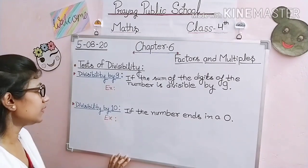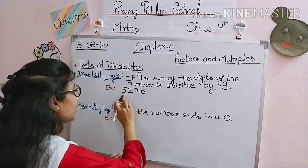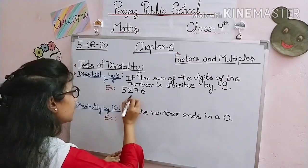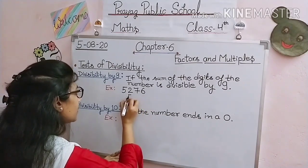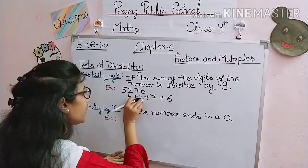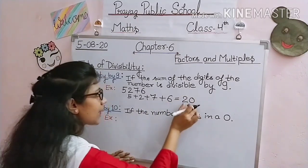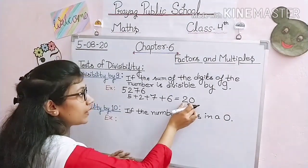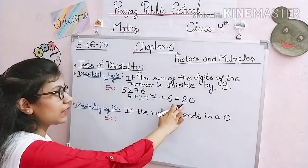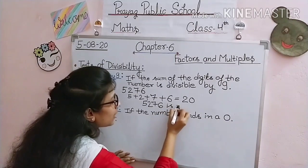Let's take one example. The number is 5,276. We check by adding each digit: 5 + 2 + 7 + 6. 5 + 2 = 7, 7 + 7 = 14, 14 + 6 = 20. Is 20 divisible by 9? No — 18 is divisible by 9 but 20 is not. It means 5,276 is not divisible by 9.